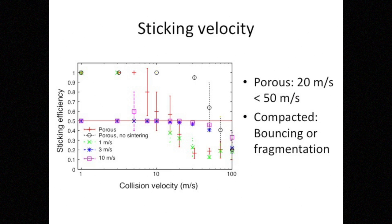However, these red crosses are for porous sintered aggregates. So if sintering proceeds, the collision growth is possible around 20 meters per second. And these two symbols are for very, very porous aggregates.